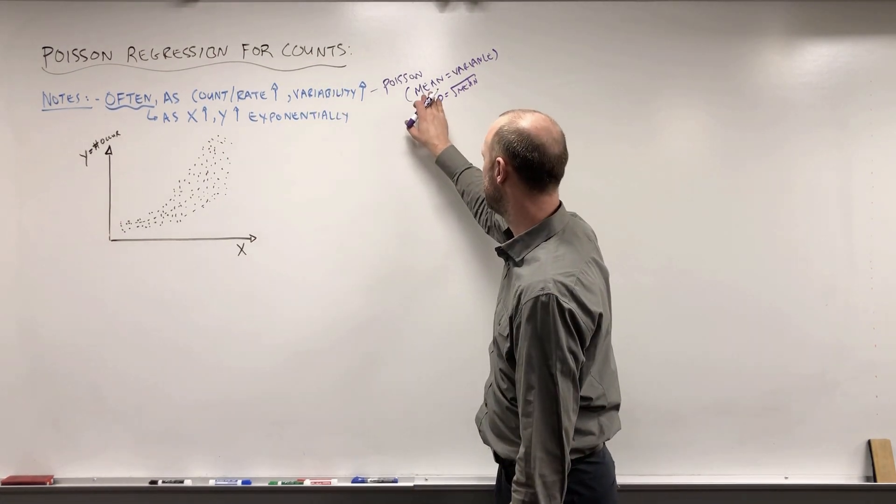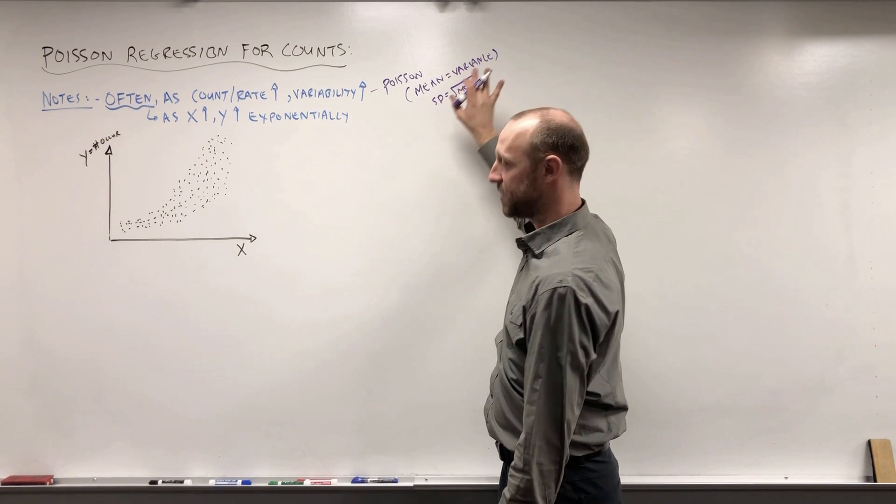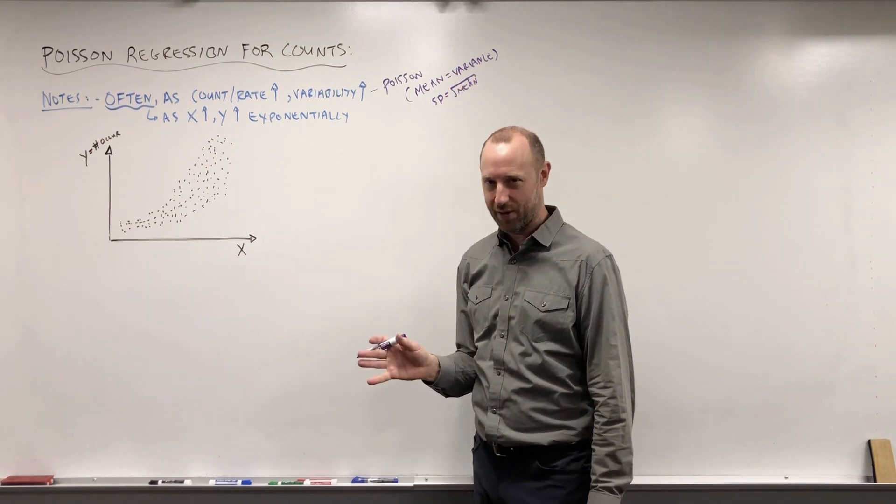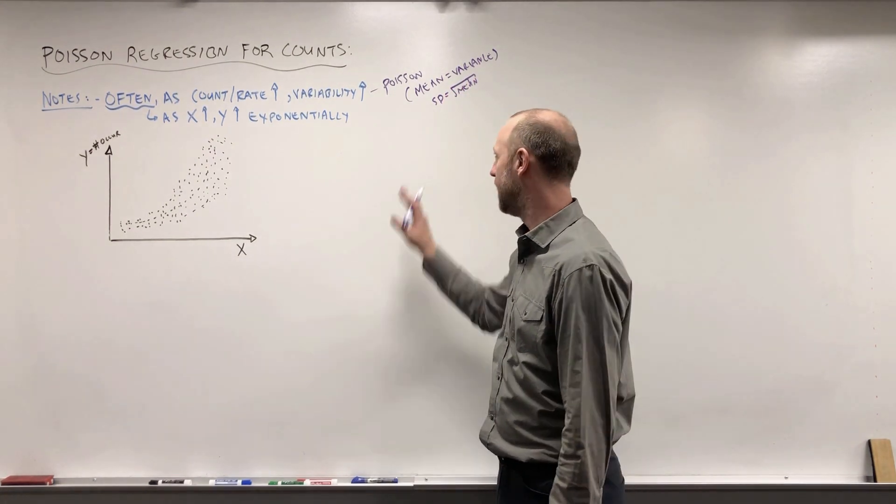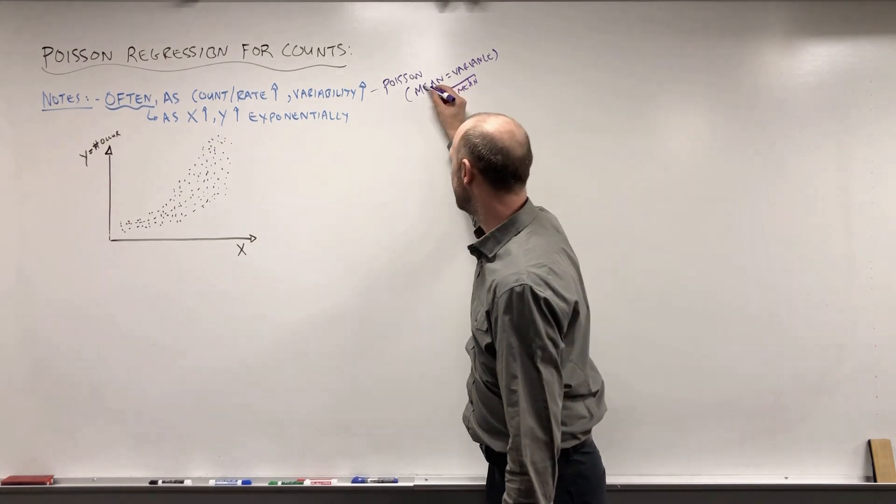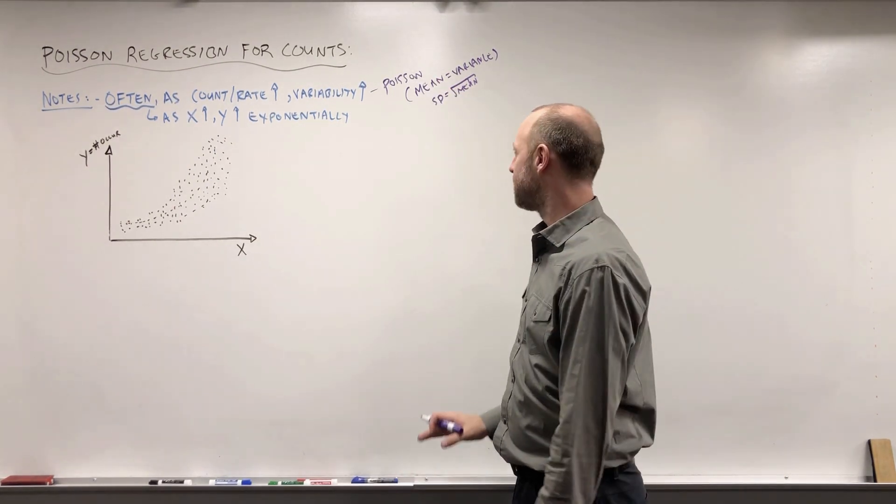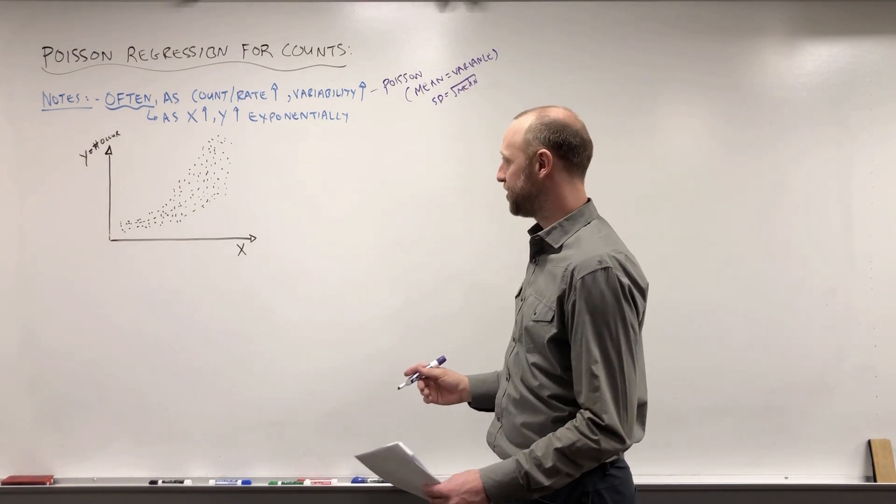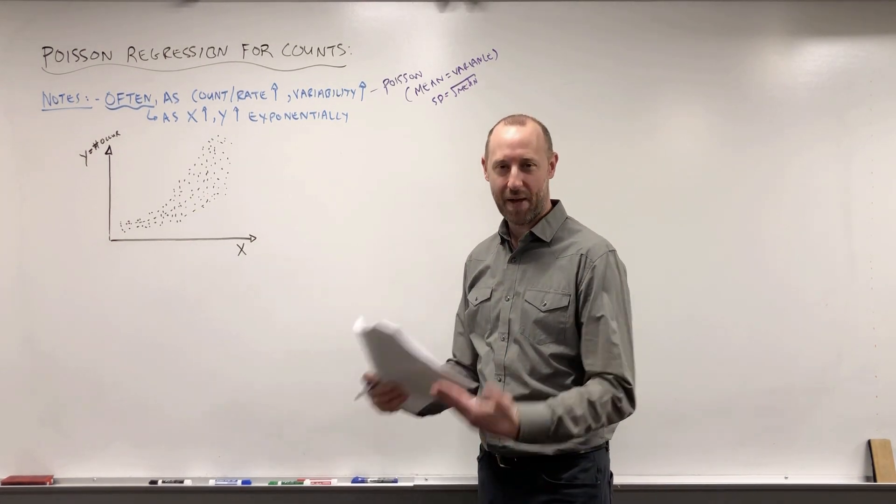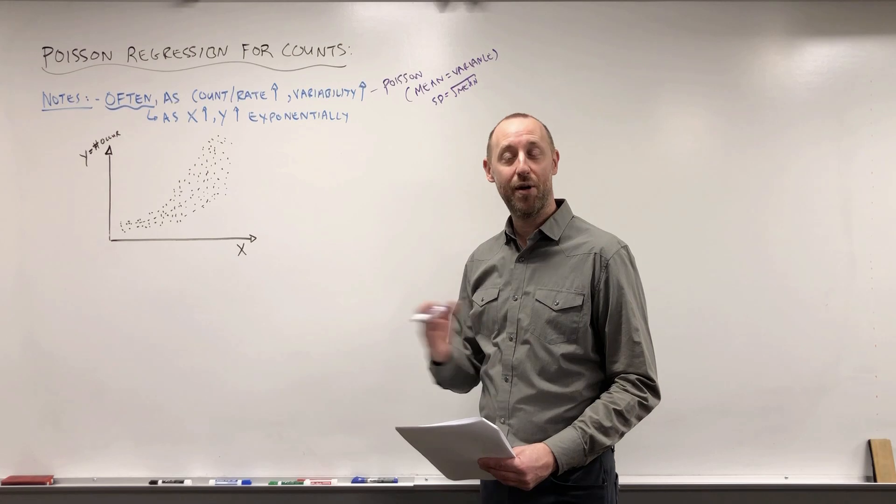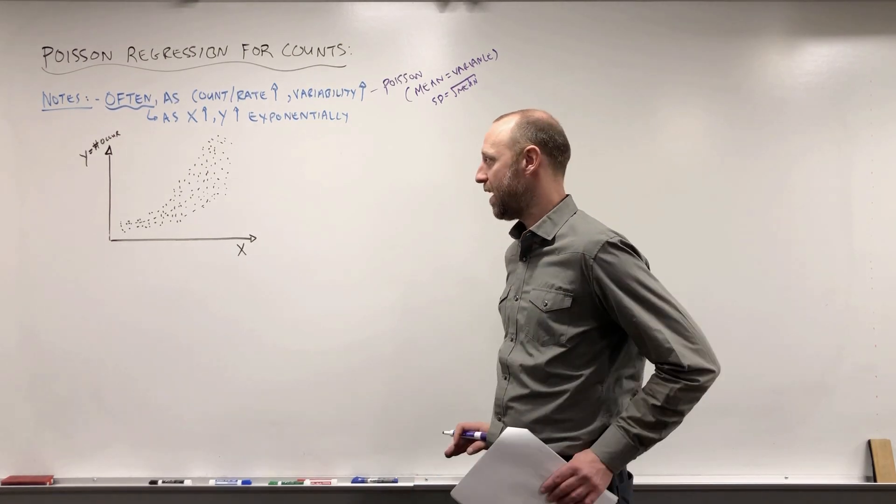It doesn't necessarily have to be the mean and the variance exactly equal. That's a theoretical probability distribution where someone else built that feature into it. But hopefully it makes sense to you conceptually that as the expected number of occurrences goes up, variability is going to go up as well when working with count or rate data.